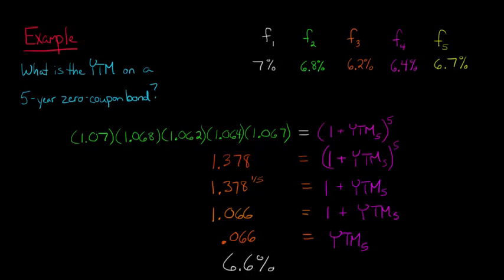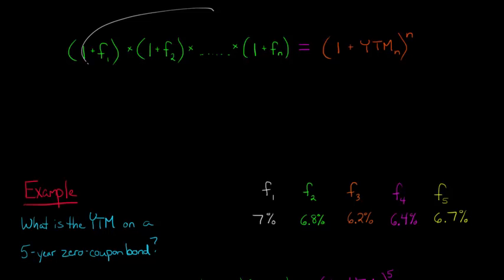So what does that mean? That means that we have used these forward rates by plugging them in to our formula above. And I probably should have mentioned, I just have here, 1 plus f to the n. That just means you continue on to whatever year zero coupon bond you're trying to calculate.